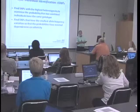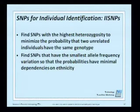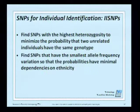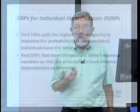For individual identification — not particularly of interest to anthropology but certainly a major issue and the main way DNA is now used in forensics — we want to find SNPs with high heterozygosity, i.e., close to 0.5, to minimize the probability of two unrelated individuals being the same, and we want to find SNPs that have the smallest allele frequency variation around the world, so the probability is not related to ancestry.